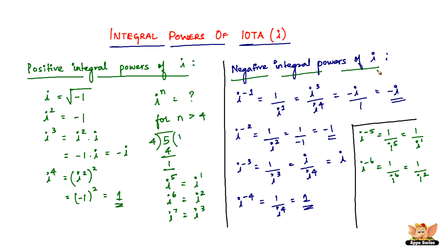That ends the negative integral powers of I, thereby ending the whole concept of integral powers of iota, I. I'll see you in the forthcoming videos with problems based on integral powers of iota.